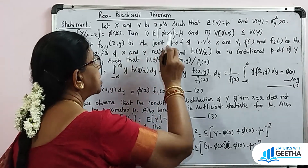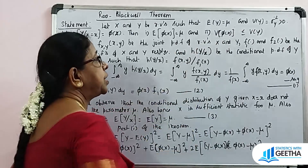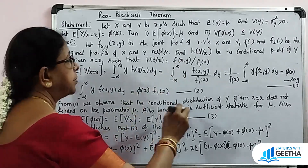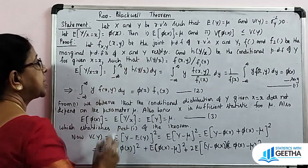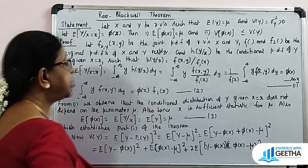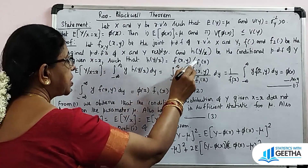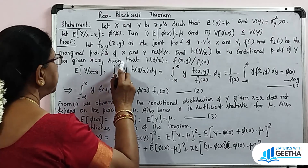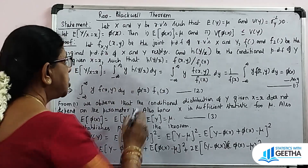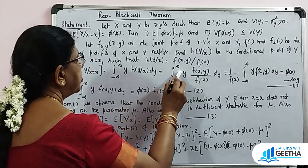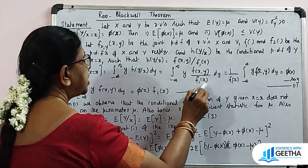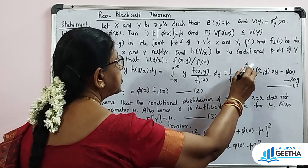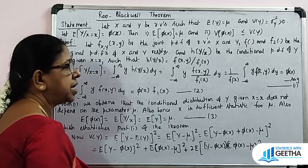Proof: Let f(x, y) be the joint pdf of the random variables X and Y. Let f₁(·) and f₂(·) be the marginal pdfs of X and Y respectively, and let h(y | x) be the conditional pdf of Y given X = x, such that h(y | x) = f(x, y) / f₁(x). So E[Y | X = x] = ∫ y · h(y | x) dy = ∫ y · f(x, y) / f₁(x) dy, which gives f₁(x) · π(x) = ∫ y · f(x, y) dy. This is equation 1, and the rearranged form is equation 2.